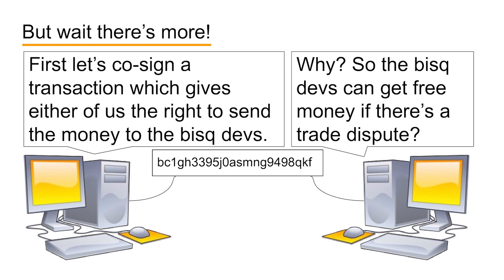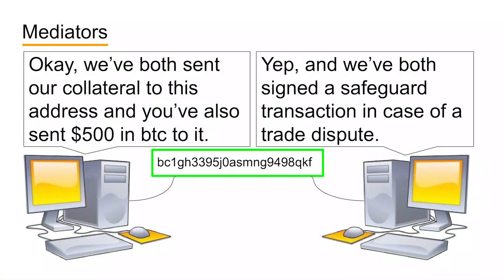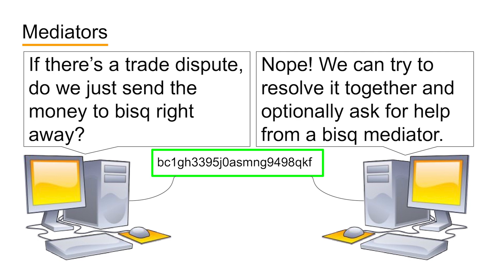It might sound like this safeguard transaction is just a way for BISC developers to get free money from trade disputes, but that's not quite correct. There's an additional protection so that that doesn't happen. Before a trade dispute ever gets to the part where either party sees the button to send the money to the BISC donation address, their computers will automatically contact a volunteer for BISC and tell him or her, 'Hey, there was a dispute during our transaction, please come and help us resolve it so that we don't end up sending this money to the BISC developers as a donation.'